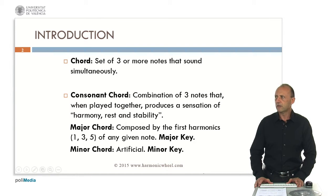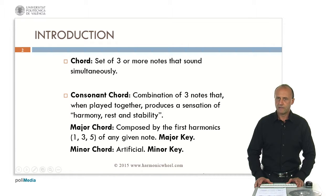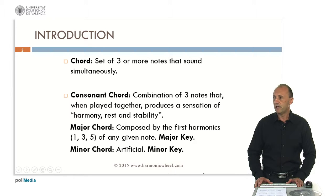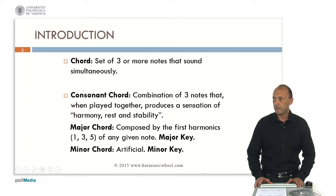A chord is a set of three or more notes that sound simultaneously. An important kind of chord is consonant. A consonant chord is a combination of three notes that, when played together, produces a sensation of harmony, rest and stability. There are only two types: the major chord and the minor chord. The major chord is composed by the first three harmonics of a given note, while the minor chord is built in an artificial way.